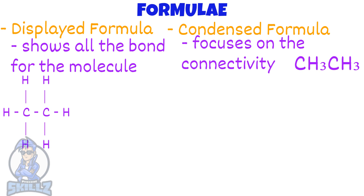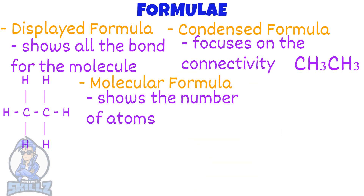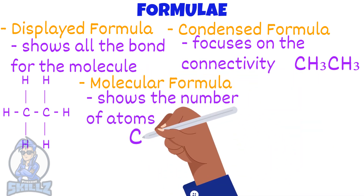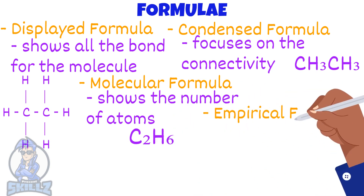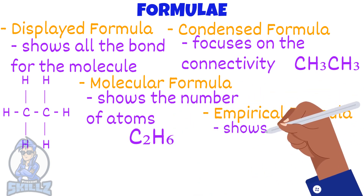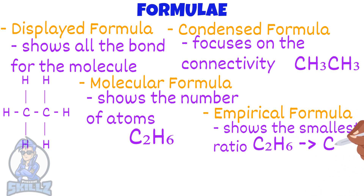The third way would be through a molecular formula. Molecular formula shows the number of atoms in the molecule. Going back to ethane, here's its molecular formula. An empirical formula shows the molecule in its smallest ratio. Ethane is C2H6. When it is shown as an empirical formula, it is CH3.